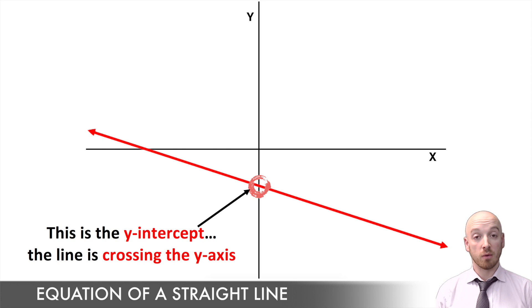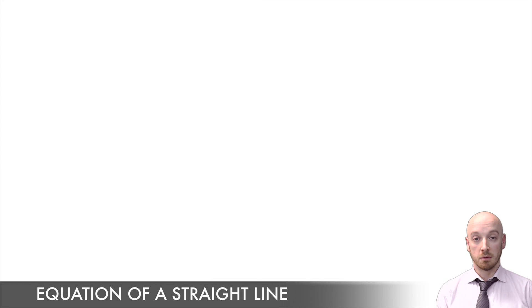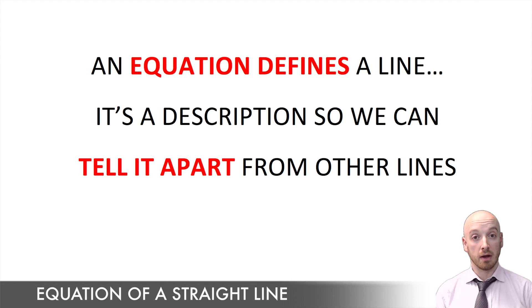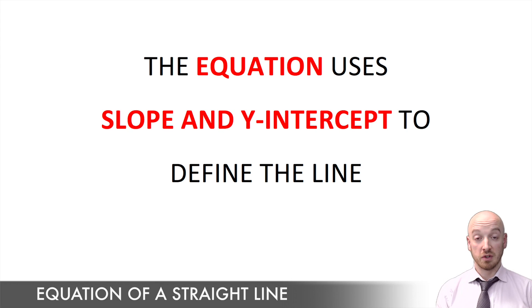And if we know the slope and the y-intercept, then we've got all the information we need to be able to tell any line apart from any other that could possibly exist. So when we talk about the equation of a straight line, we're talking about a way to define a line and differentiate it from any other line on the Cartesian plane. So an equation is gonna use a combination of the slope and the y-intercept to describe exactly what a straight line looks like.